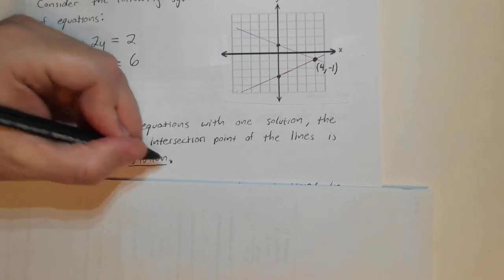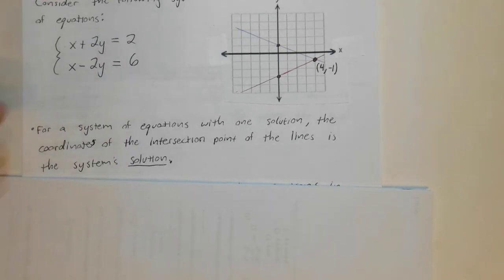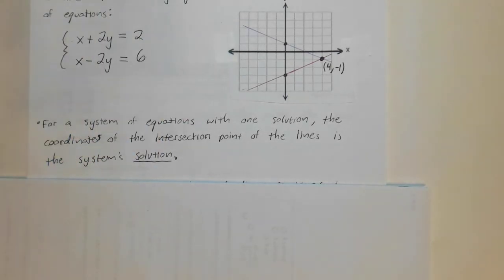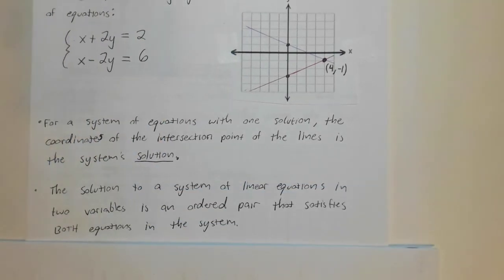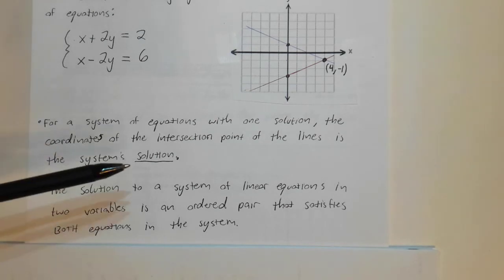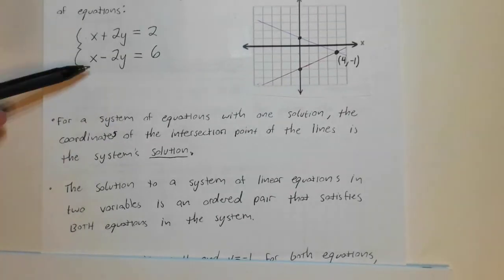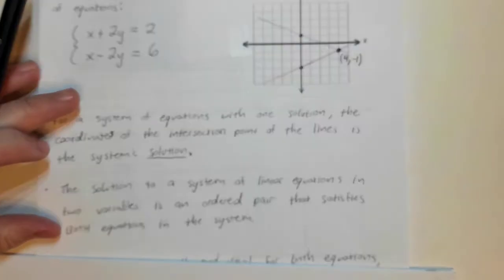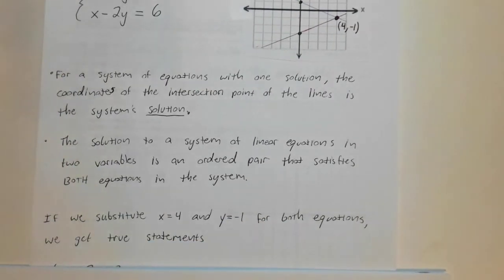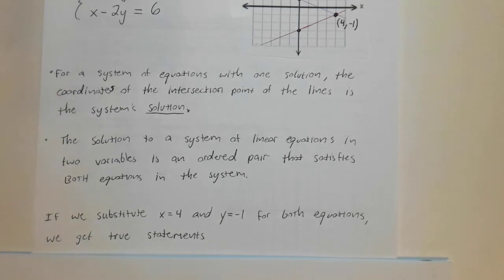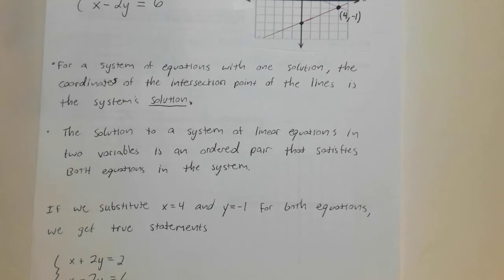If we'll ask you in the homework to verify if a point is a solution, that just means where the two lines intersect. And also, if a point is a solution, then the solution of a system of equations is the ordered pair that satisfies both equations in the system. So what that means is, if I substitute for this system of equations, since we know our answer is 4, negative 1, if we substitute x equals 4 and y equals minus 1 into both equations, we should get true statements.